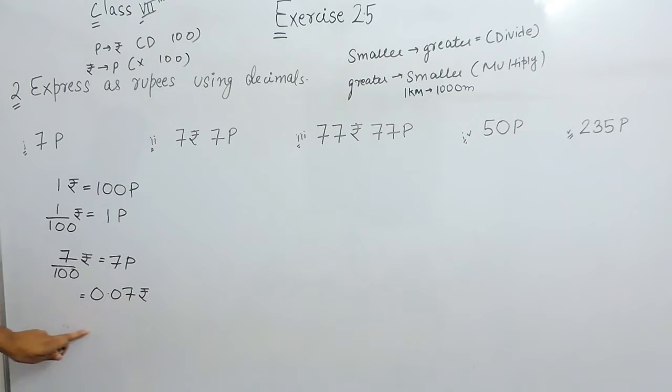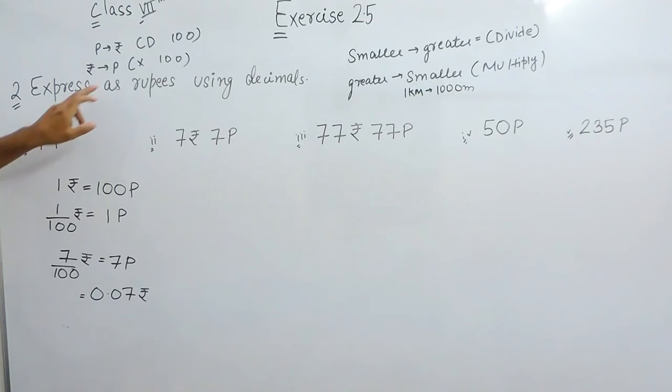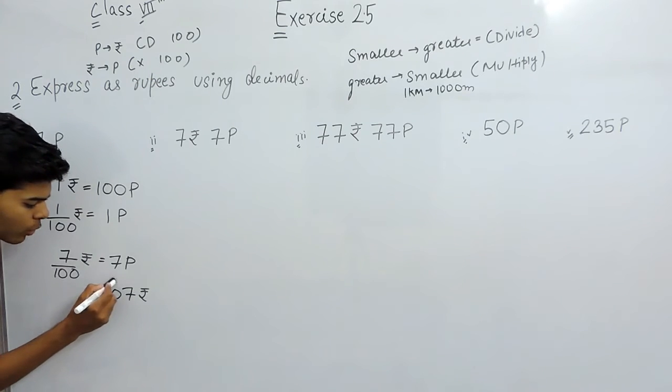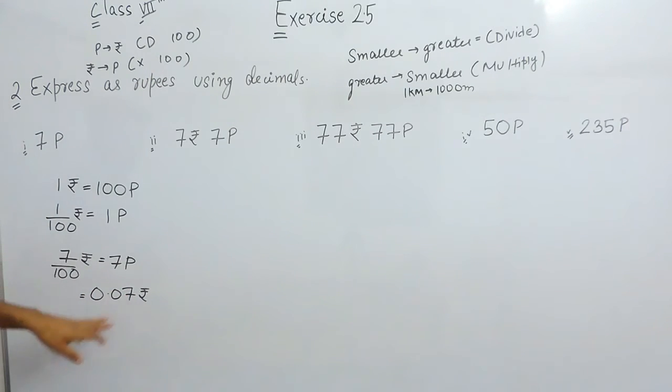Now, we will check that the answer we have given is correct. It is in rupees. We have to convert it in paisa and we will multiply it with 100. Point will be shifted 2 times right side and that will give us 7 paisa.